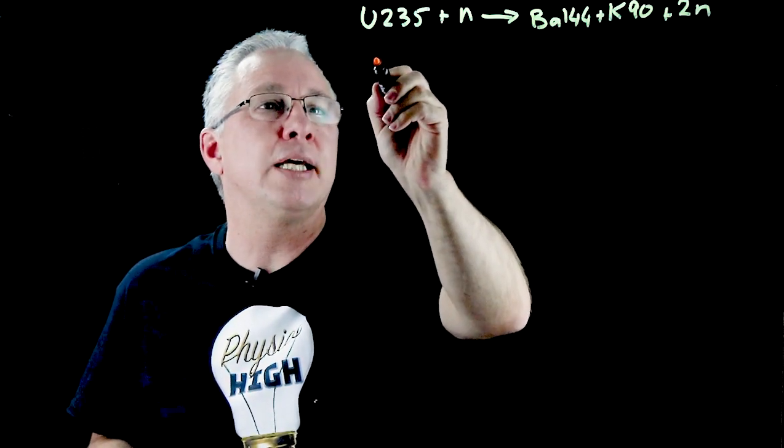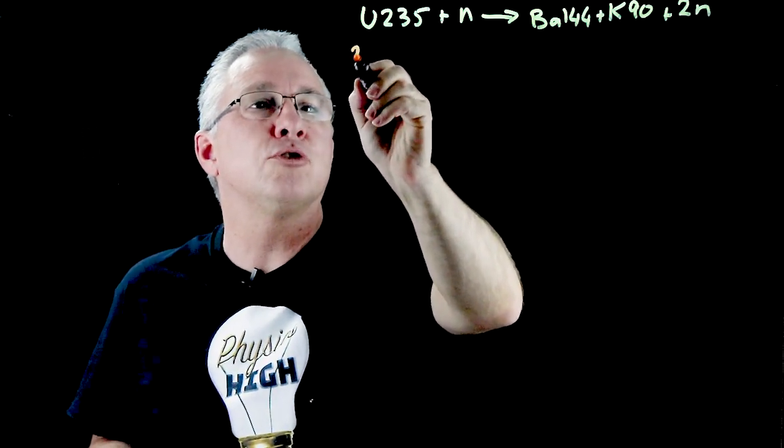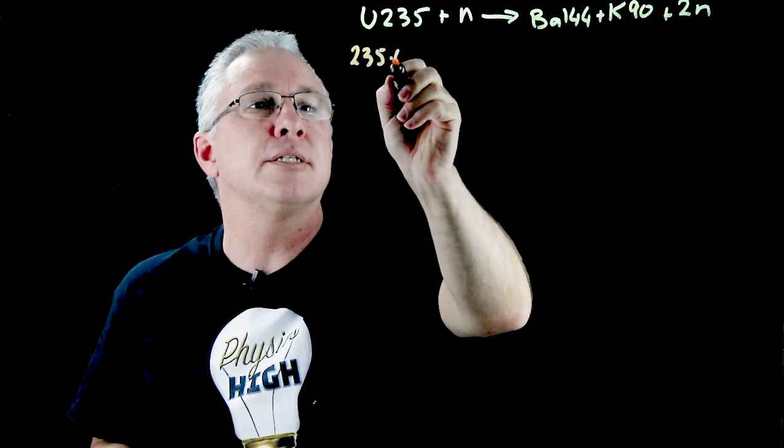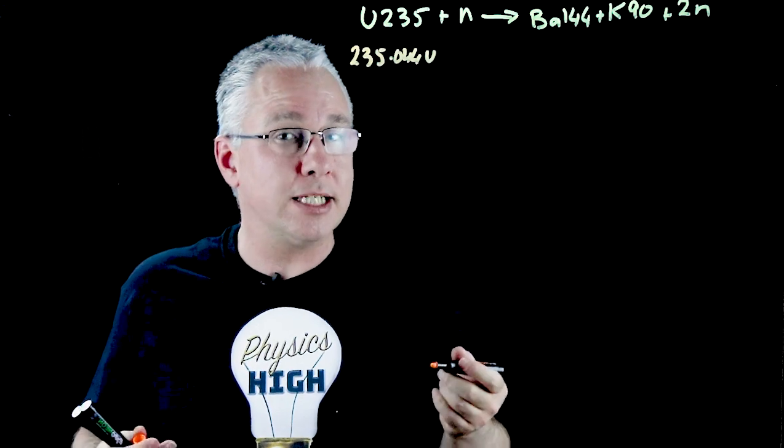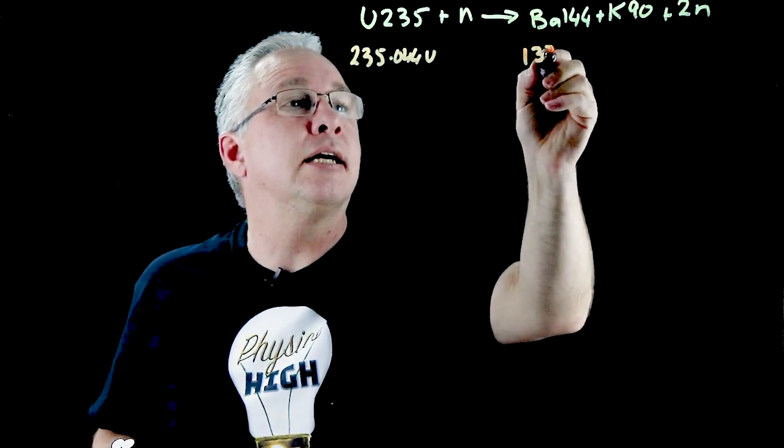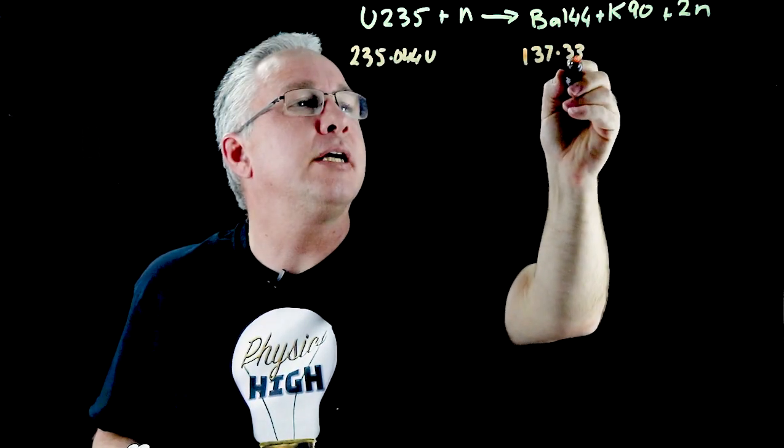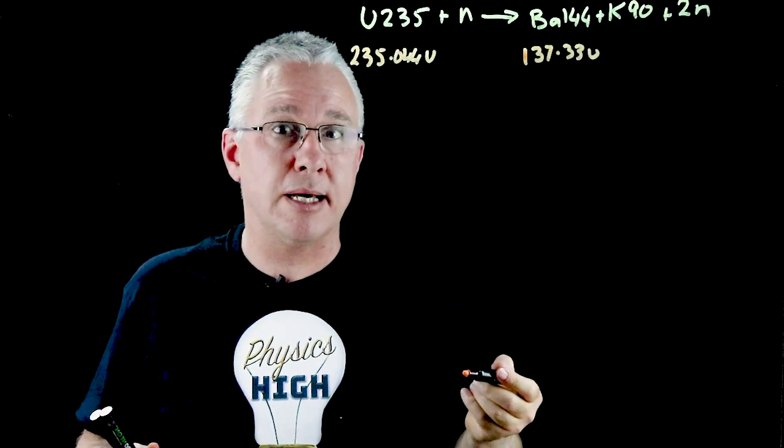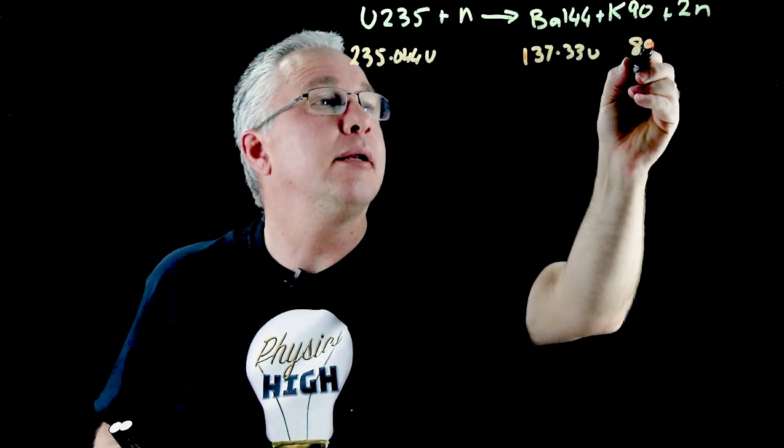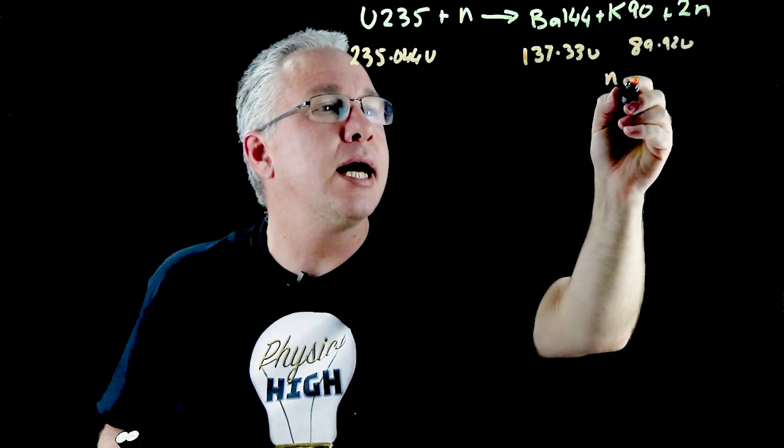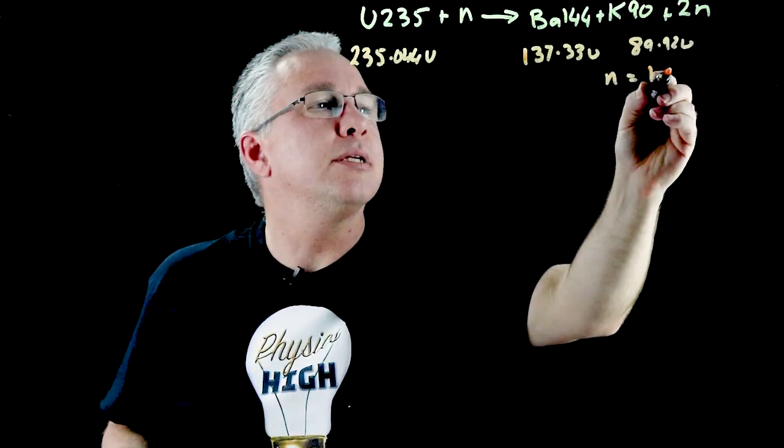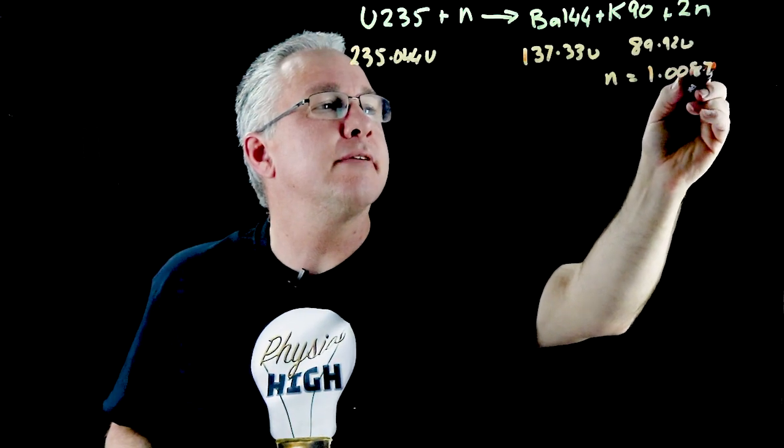The mass of uranium-235 is equal to 235.044u. The barium-144 has a mass of 137.33u. The krypton has a mass of 89.92u. The neutron has a mass of 1.0087u.